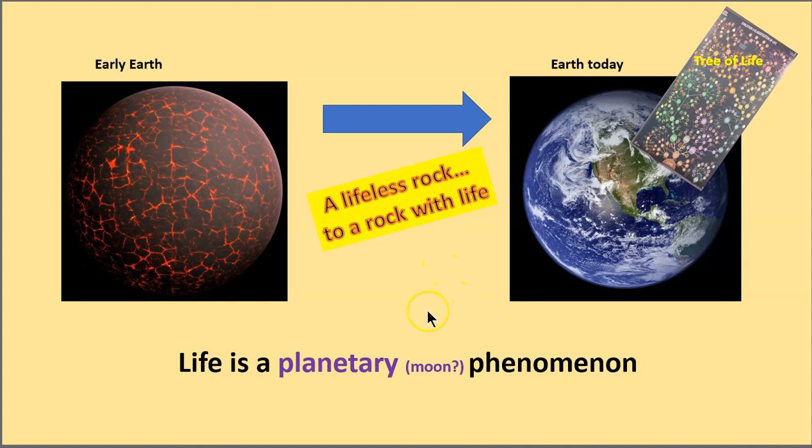So that forces us to think about life in the context of the universe. Life is a planetary phenomenon. Possibly it could emerge on a moon, for example. But what we mean here is that by saying it's a planetary phenomenon, there have to be the right kinds of conditions, the chemical conditions, the flows of energy, and the diversity of chemical compounds in some suitable place on a planet or a moon, and then you have the possibility for life to emerge. As far as we understand life, it just would not be able to emerge inside the core of a star, for example. So life is something that a planet, possibly a moon, can produce. A lifeless rock to a rock with life.